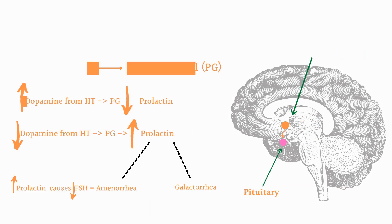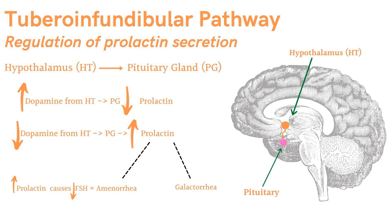Last but not least, the fourth pathway is called the tuberoinfundibular pathway. This is the pathway where prolactin is secreted. Dopamine travels from the hypothalamus, noted by the orange dot, to the pituitary gland, noted by the pink dot. Whenever there is an increase in dopamine, there will be a decrease in prolactin level, and vice versa — a decrease in dopamine increases prolactin. Increased prolactin causes amenorrhea and galactorrhea. You might see breast growth or, in rare cases, discharge of breast milk.